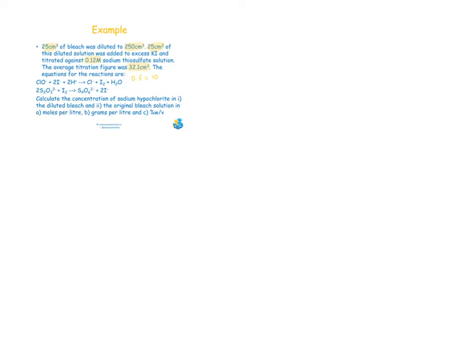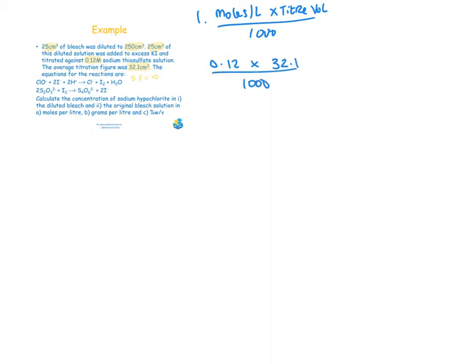Step one of first principles asks us to find the moles of the standard solution in the titre volume, using the formula: moles per litre × titre volume ÷ 1000. The moles per litre of our standard solution — sodium thiosulfate — is 0.12, multiplied by the titre volume of 32.1, divided by 1000, giving 0.003852 moles.